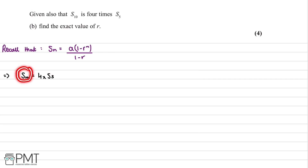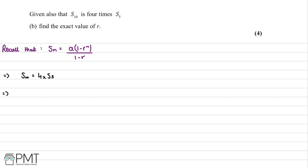We substitute the formula, replacing n with 10 on the left and n with 5 on the right: a times 1 minus r to the power of 10, divided by 1 minus r, equals 4 times a times 1 minus r to the power of 5, divided by 1 minus r.